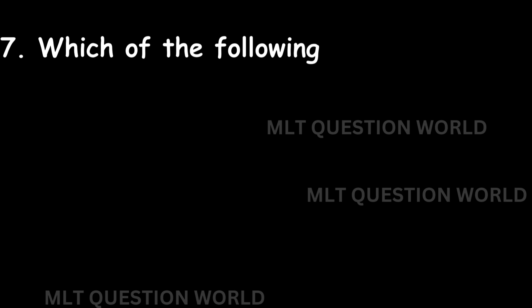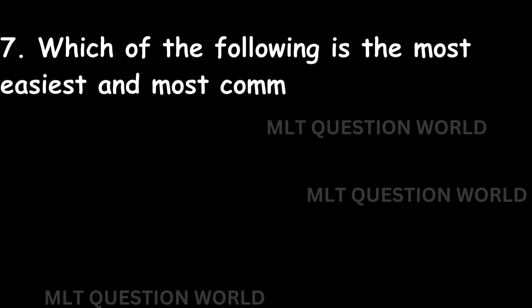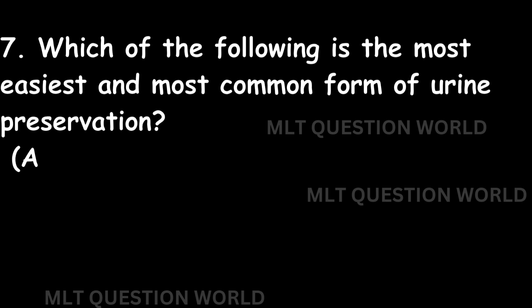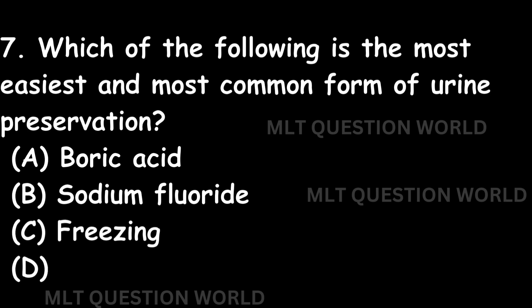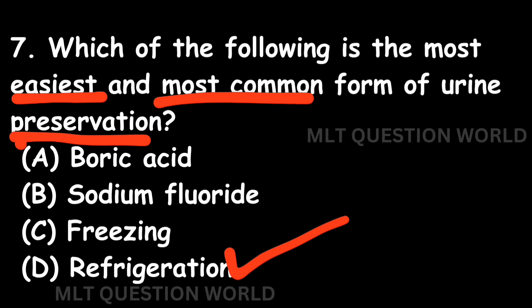Question number seven: Which of the following is the most easiest and most common form of urine preservation? Option A: Boric acid. Option B: Sodium fluoride. Option C: Freezing. Option D: Refrigeration. The right answer is Option D: Refrigeration, because the most easiest and most common form of urine preservation is refrigeration.